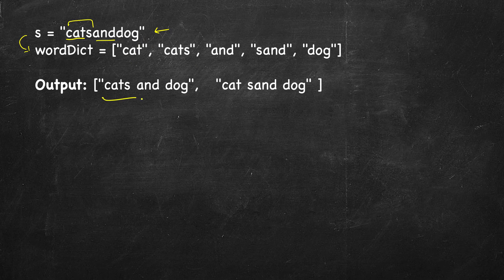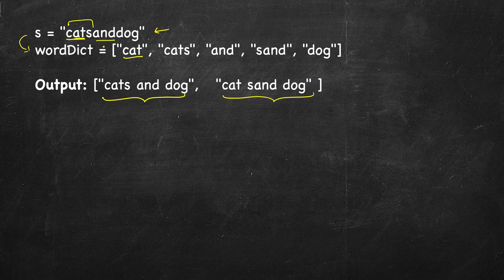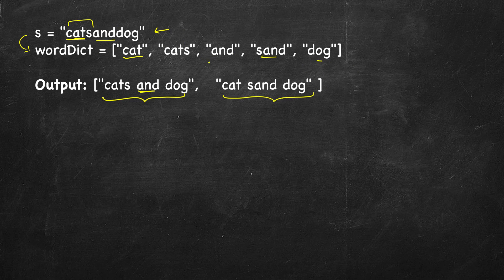We have to return all such valid sentences, not just one. In the first case we take 'cat' as the first word since it's present in the dictionary, so the result is 'cat' and the second part is 'sand dog'. Repeat the same logic: first word is 'sand', which is present, and next word is 'dog'. In the second case we took 'cats', so the remaining is 'and dog', and first word 'and' is there, then 'dog'. There are no other possibilities. So how will we attack this kind of problem?